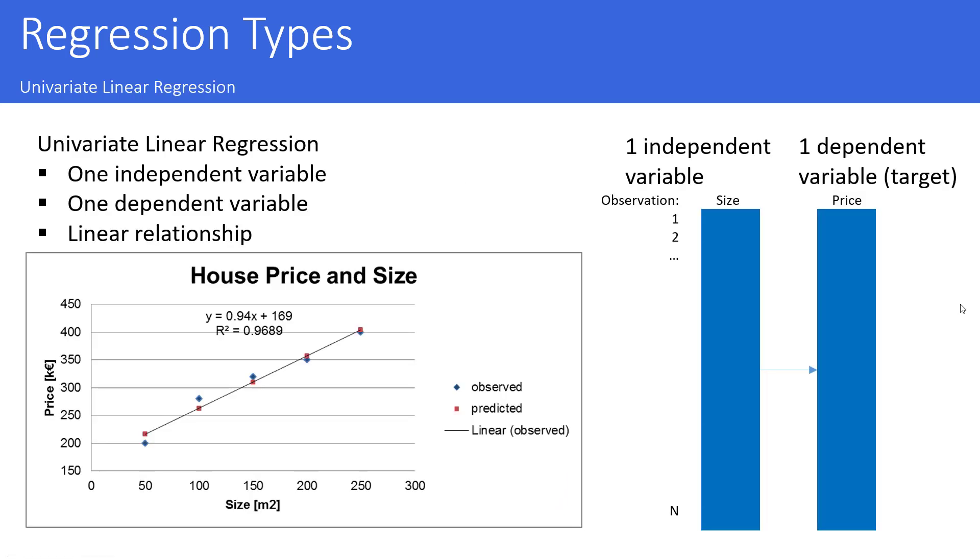Let's talk about the most simple case, univariate linear regression. Assume you want to predict the price of a house and the most important parameter is the living size. The data is completely artificial. I made it up myself for just showing the principle.